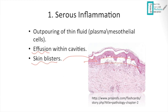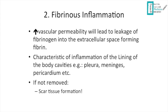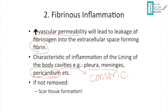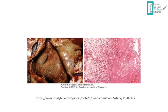Fibrinous inflammation involves increased vascular permeability leading to leakage of fibrinogen into the extracellular space, forming fibrin. This is characteristic of inflammation of body cavities such as the pleura, meninges, and pericardium. In the pericardium, it can obliterate the pericardial space and lead to constrictive pericarditis if not removed, resulting in scar tissue formation.